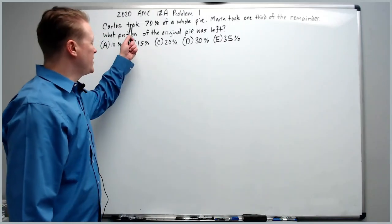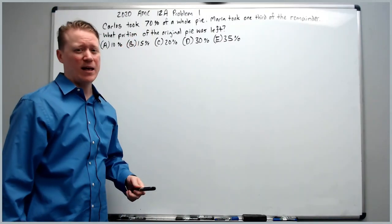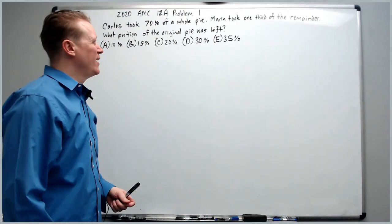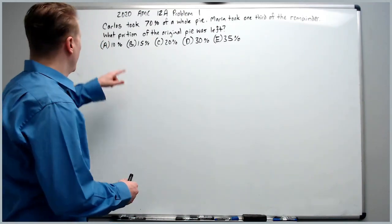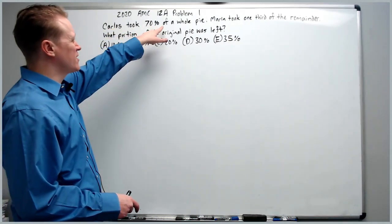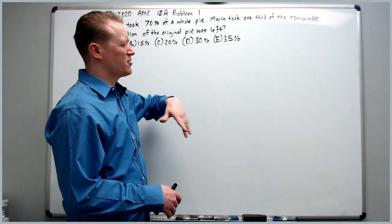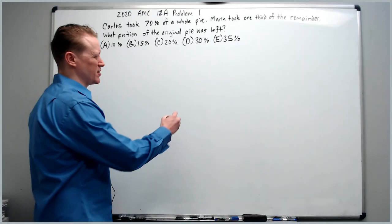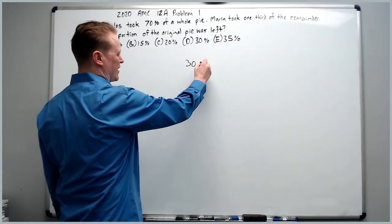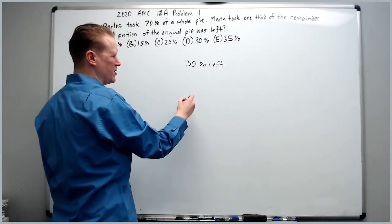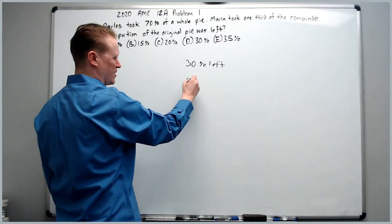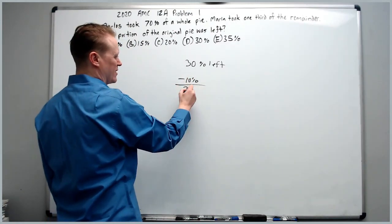All right, now I'm going to do the 2020 AMC 12A problem number one, the first question from this year's test. Let's get started. Carlos took 70% of a whole pie, so think about it. If he took 70%, then there's 30% left. Maria took one-third of the remainder, so she took 10%. Then what's left?